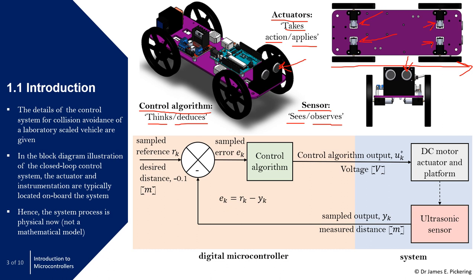In terms of what the control system looks like, you can see the block diagram form, which looks very similar to what you've seen in previous classes on control — continuous time or discrete time. The sampled reference R_k is your desired distance of minus 0.1 metres. We have the measured distance as our sampled output, and the sampled error E_k equals the reference minus the sampled output.